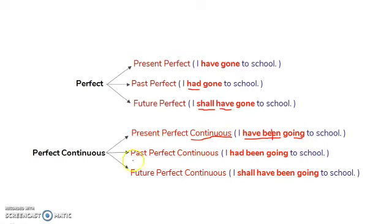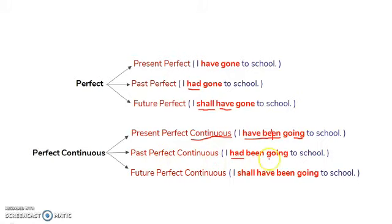In past perfect continuous: 'I had been going to school.' It is almost the same as present perfect continuous. The only change is that 'have' is changed into 'had' because it is past. 'Had' indicates the past action, 'been' shows it is perfected, and the ing form 'going' shows it is a continuous action.